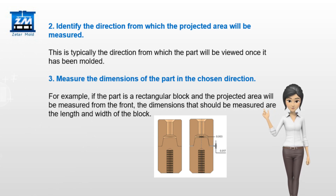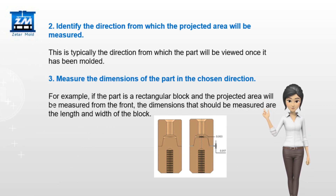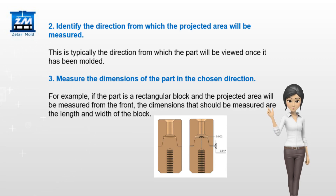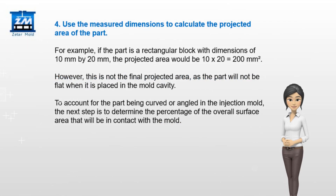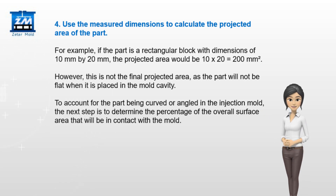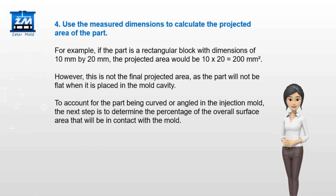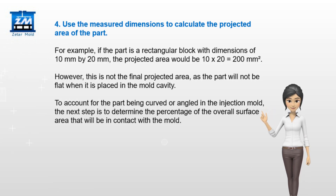Measure the dimensions of the part in the chosen direction. For example, if the part is a rectangular block and the projected area will be measured from the front, the dimensions that should be measured are the length and width of the block. Use the measured dimensions to calculate the projected area. For example, if the part is a rectangular block with dimensions of 10 mm by 20 mm, the projected area would be 10 x 20 = 200 square millimeters.